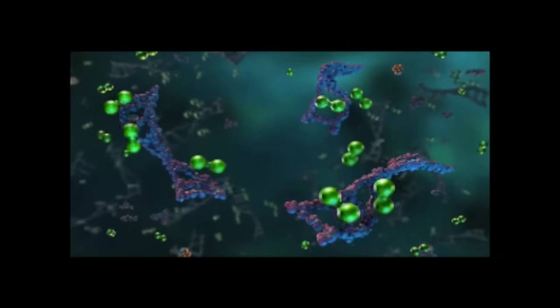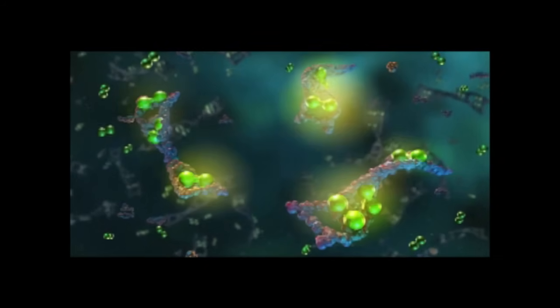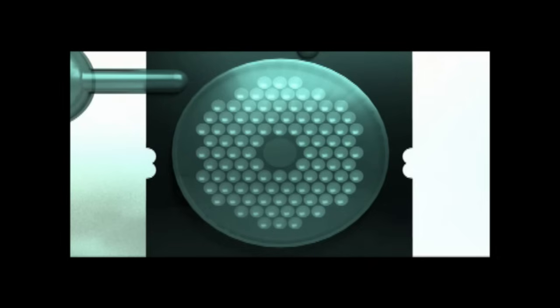A fluorescent double-stranded DNA binding dye is used to monitor each reaction. The second stage primers in each well are designed to detect one specific target. Organisms are identified based on which wells in the array are positive.